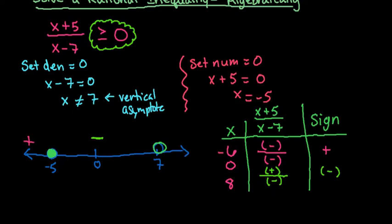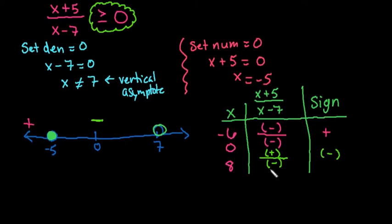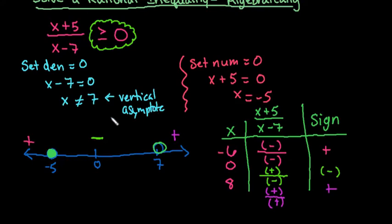And then the last one is 8. So for 8, what we would do is we would plug in 8. 8 plus 5 gives me a positive. And then if I do 8 minus 7, that also gives me a positive. And a positive divided by a positive is a positive. So we can see that we have two intervals that are greater than or equal to 0 or that result in positive values.